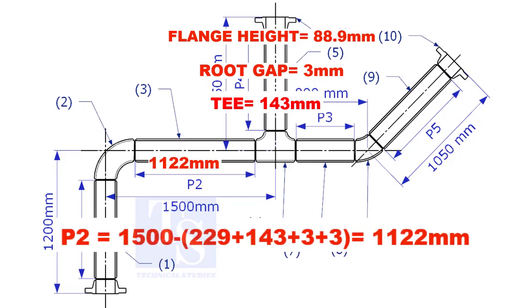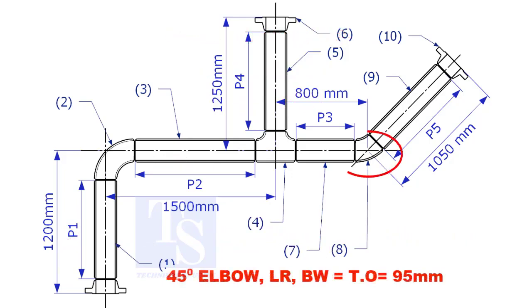The length of item number 3 is 1122mm. Takeoff length of the 45 degree elbow is 95mm.